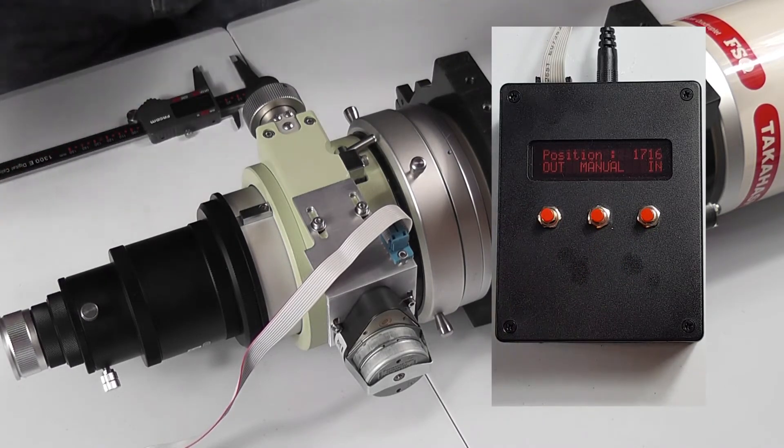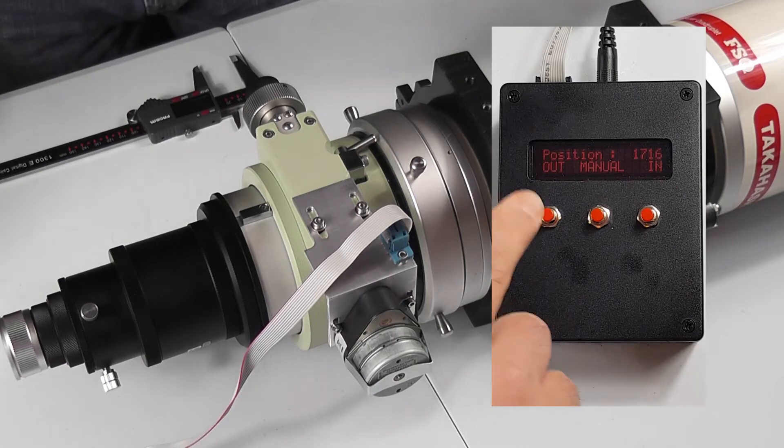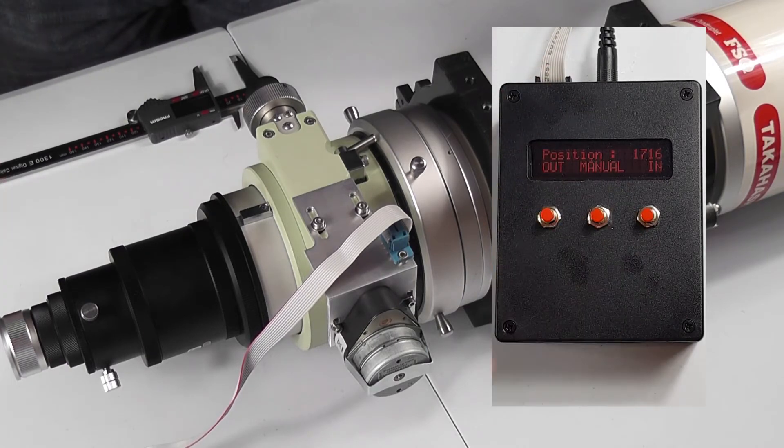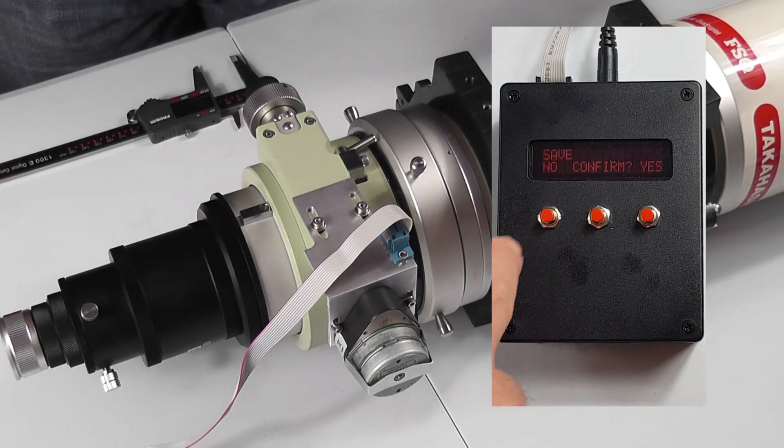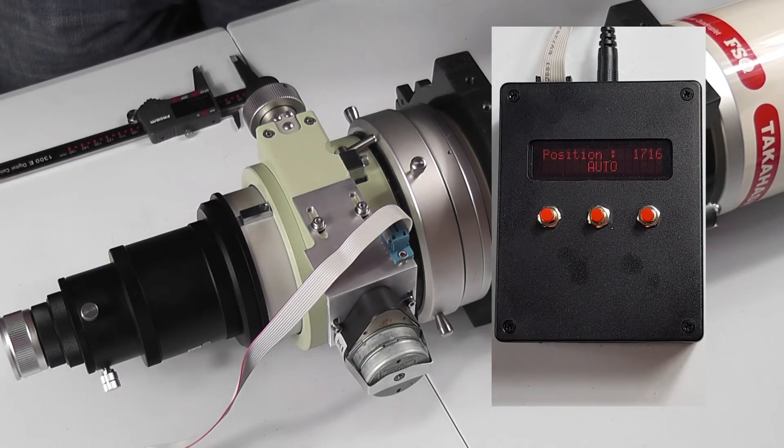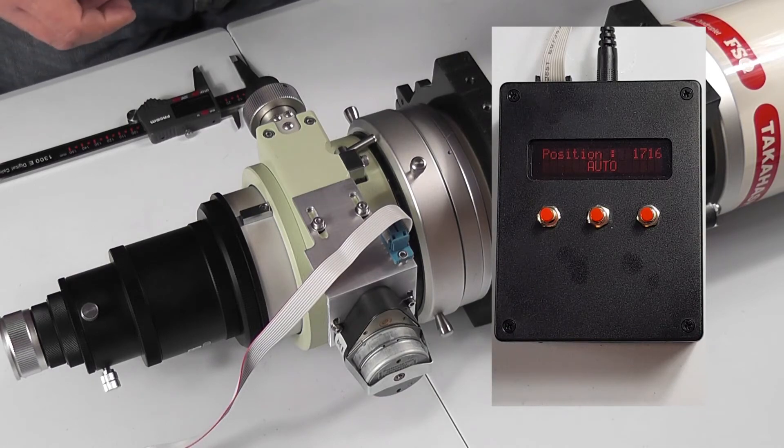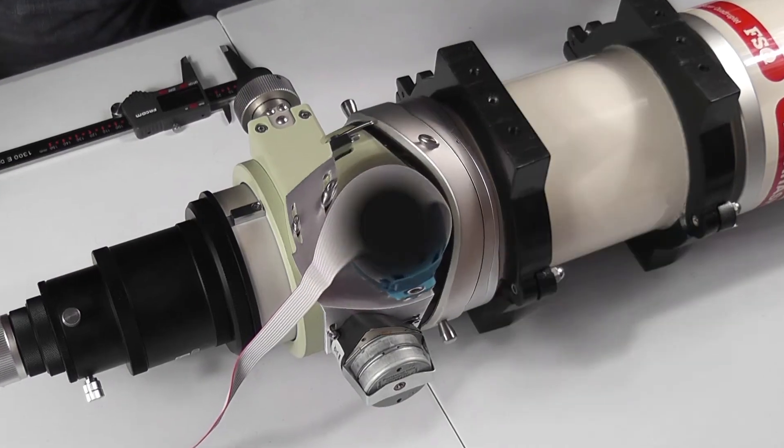So what happens now is once all that's done, we're now calibrated, we're ready to go. On the next part I'll run over running the controller via the computer and software—so Sequence Generator Pro. And hopefully that's been helpful for this part, getting you up and running. See you soon, bye.